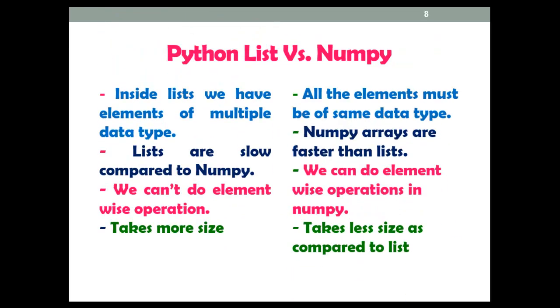Now, what are the actual differences between Python lists and NumPy? Inside lists, we have elements of multiple data types, while in NumPy, elements must be of the same data type. Lists are slow compared to NumPy, and NumPy arrays are faster than lists.